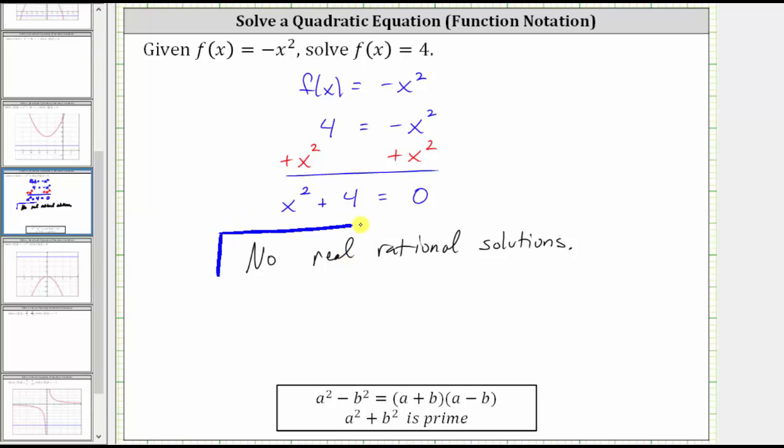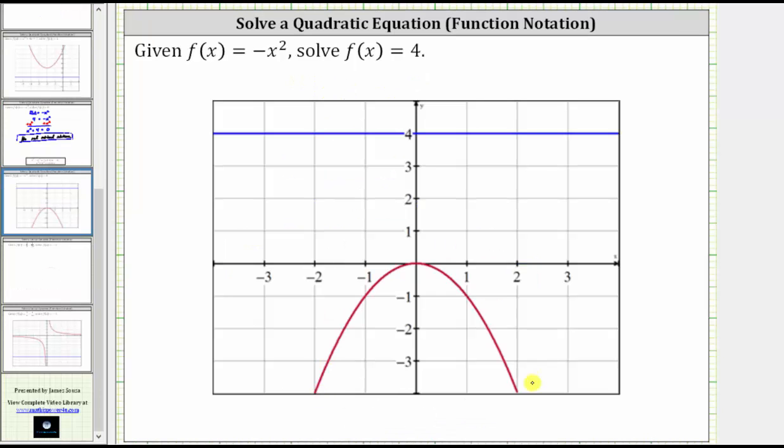Before we go, let's verify this graphically. In red, we have the graph of f of x equals negative x squared. In blue, we have the graph of f of x equals four.